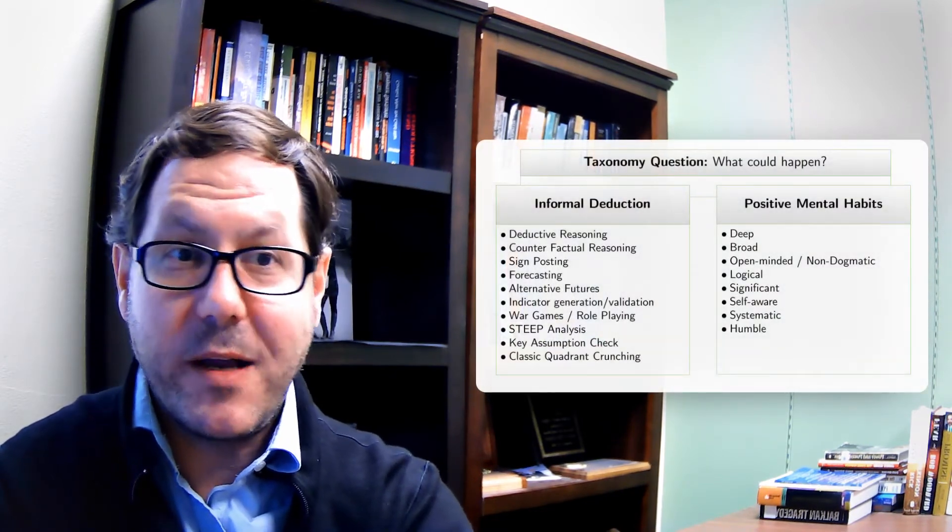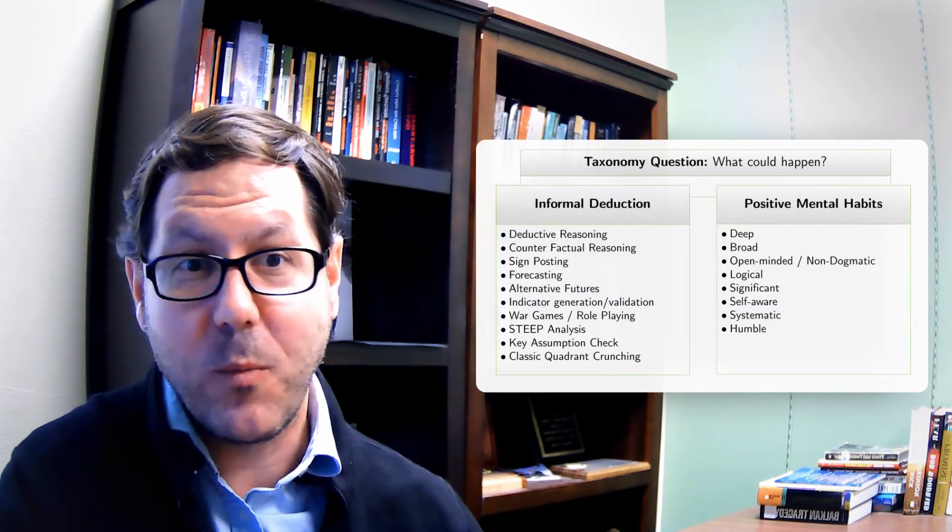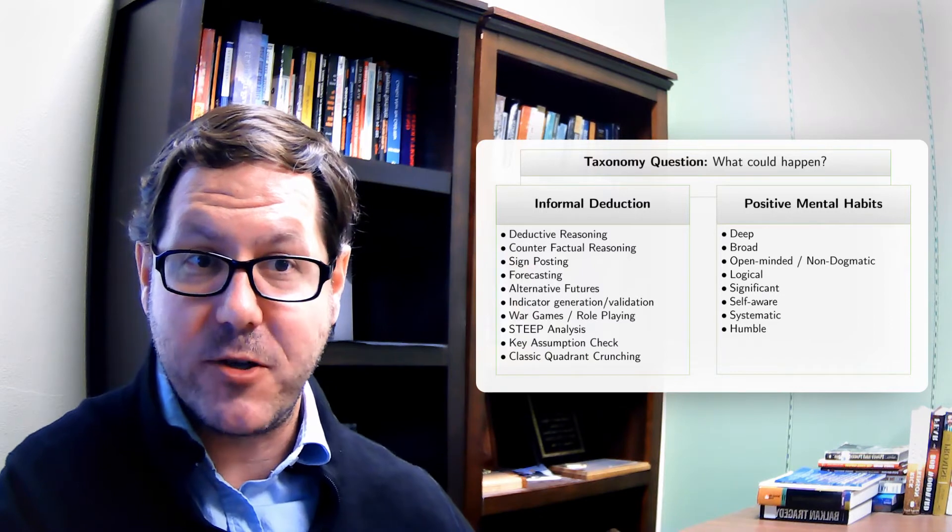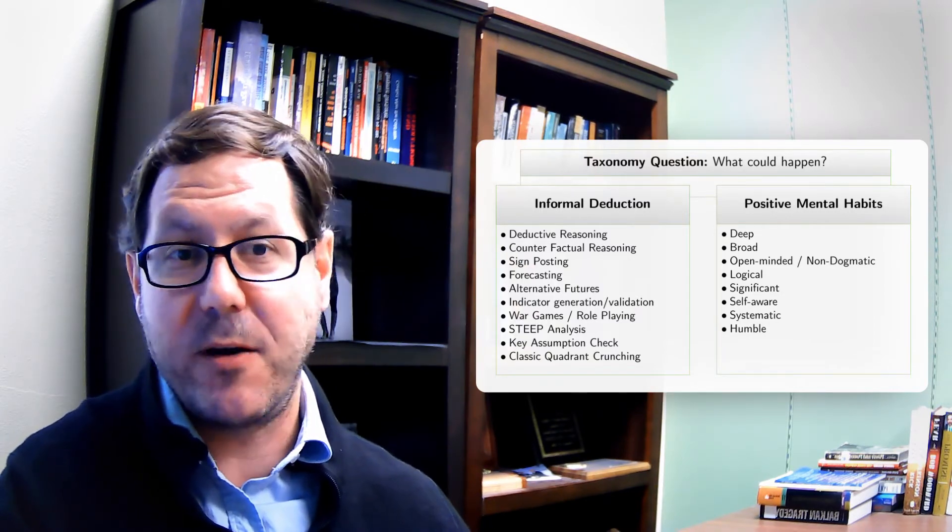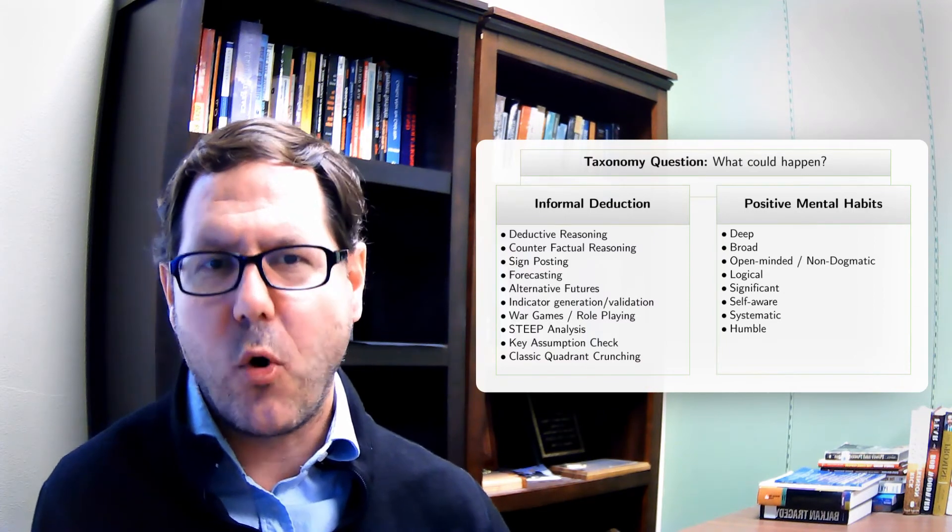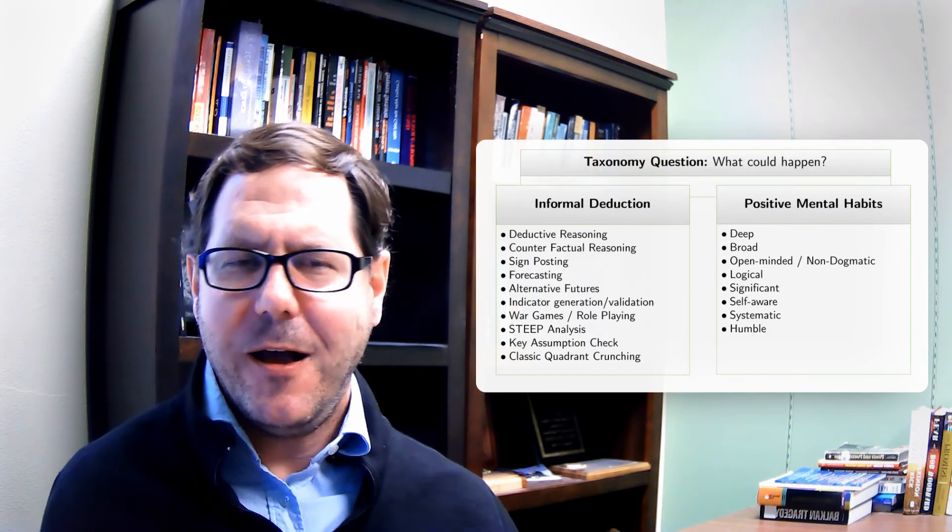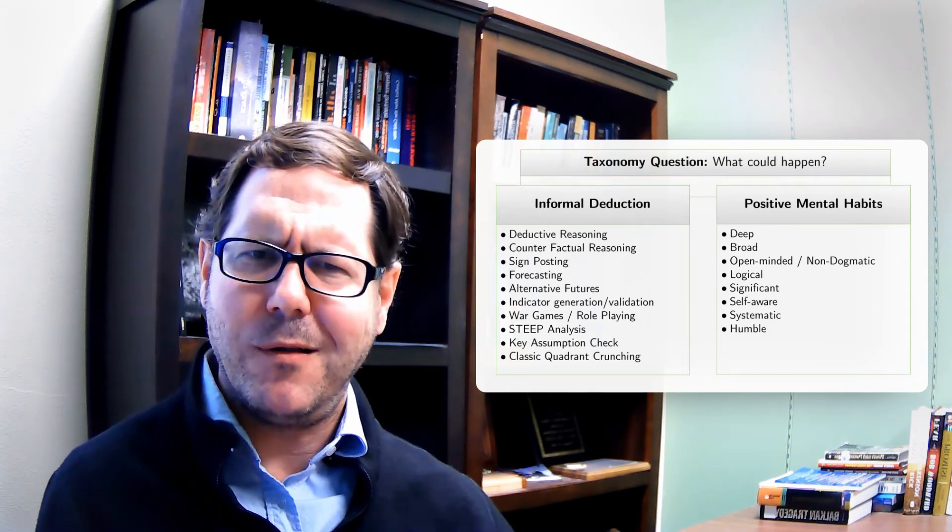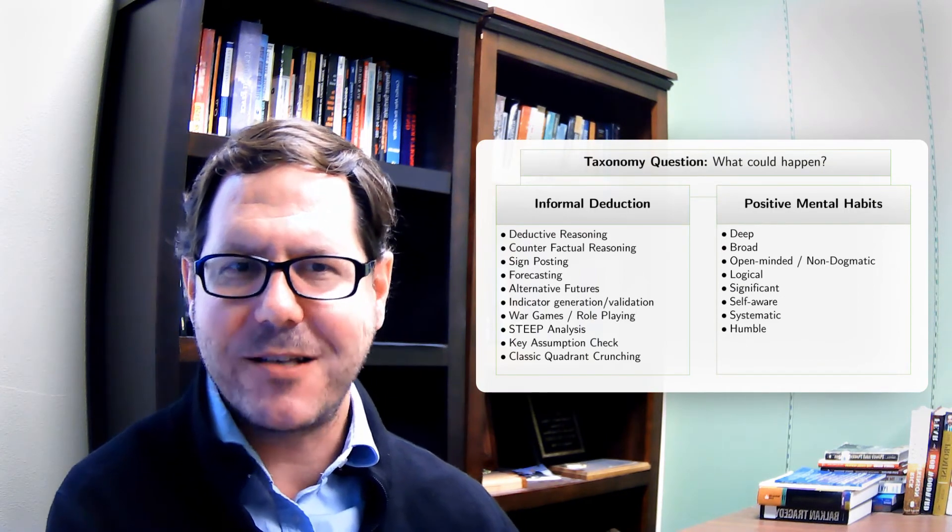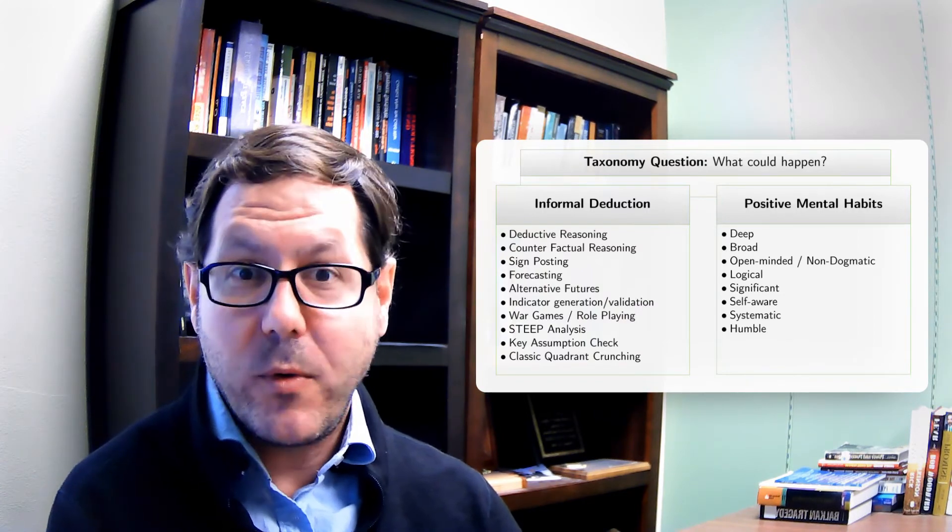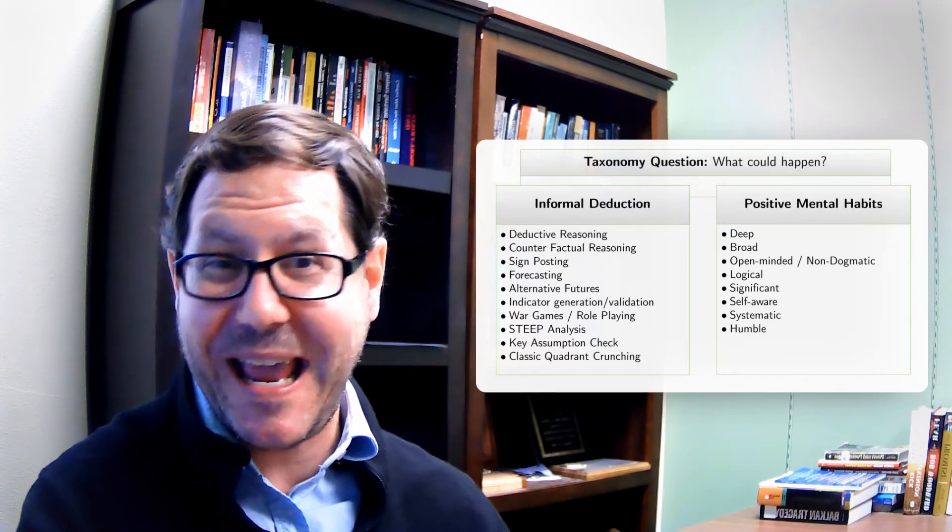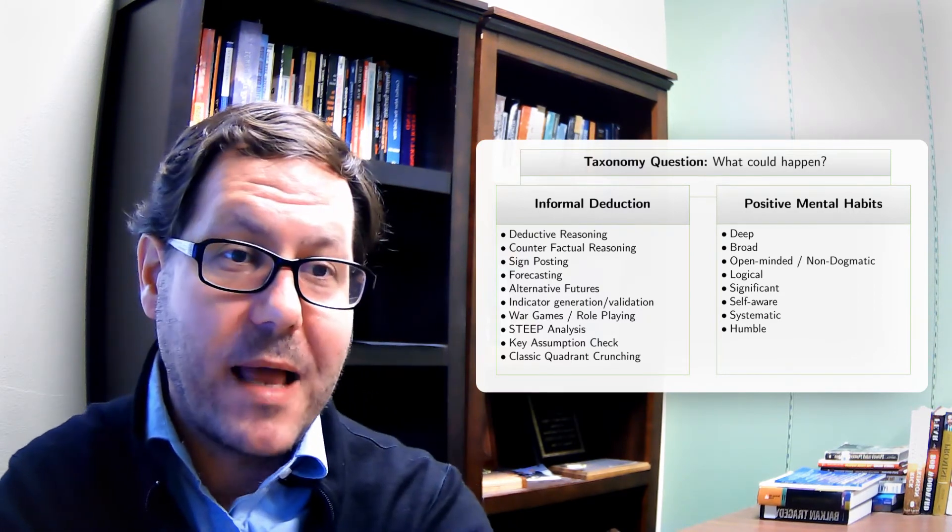When we start thinking about more future oriented questions like what could happen, inductive reasoning is gone. We're back to just deductive reasoning. I think I have a theory about how the world works, I'm going to try to apply that. But we've added in counterfactual reasoning. What would happen if I changed things? If something shifted, we've added in some forecasting or forward looking things like signposting or alternative futures. We're trying to think about the dynamic interactiveness with war games, with role playing. We're trying to think about a wide range of factors with the STEEP analysis or the social, technological, environmental, economic, and political dimensions to a problem. We're doing different kinds of analytic structured tasks to try to answer this different kind of question. Our thinking like with the why question should still be broad. It should be deep. We still want logical. But we've added in humble, that there's a lot of complexity and things that we can't possibly know. And so we need to be aware of that and bring that to the table with us as we're working on these problems.